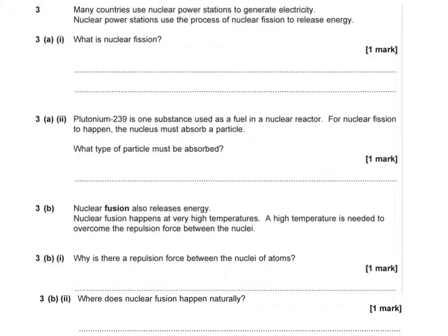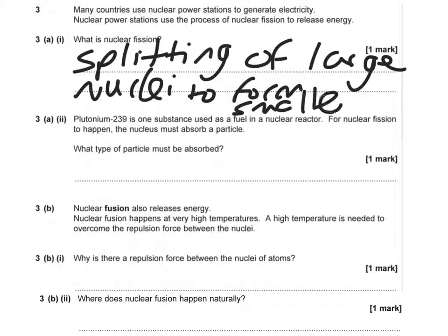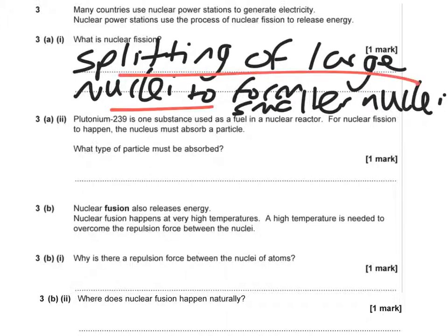The first part of question 3 is all factual recall, so it should be quite straightforward if you've done the revision. Nuclear power stations use processes of nuclear fission to release energy. Nuclear fission is the splitting of large nuclei to form smaller nuclei. Please be aware you can't use the word 'atom' — it's splitting of large nuclei to form smaller nuclei. It also releases energy.